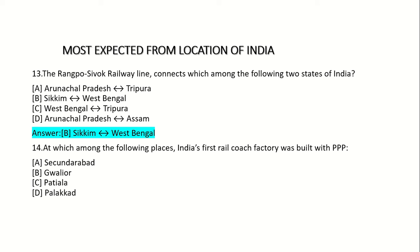14th question: At which among the following places was India's first rail coach factory built? Option A: Perambur. Option B: Gwalior. Option C: Patiala. Option D: Palakkad. Answer: Option D — Palakkad.